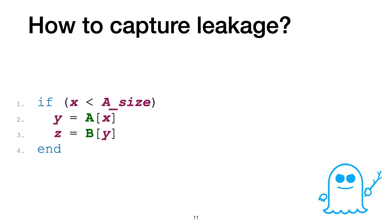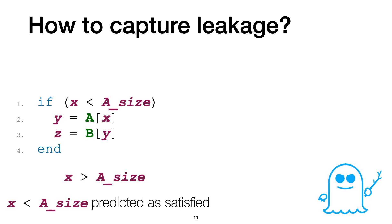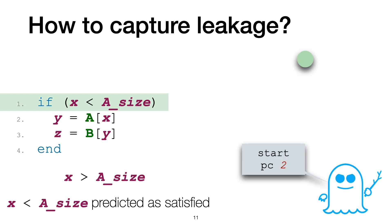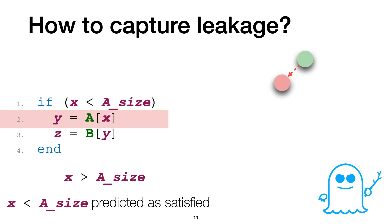Let's look at how this works with an example. This is the Spectre V1 snippet from before. We consider a case where x is out of bound and the condition is predicted as satisfied. When executing the program under the speculative semantics, we start from statement number 1. The semantics starts the speculative transaction and moves to statement 2 since the condition is predicted as satisfied — the attacker observes this, denoted by the start and pc2 observations. Then, we speculatively execute the first memory access and the attacker observes the address, in this case denoted by the load a plus x observation.